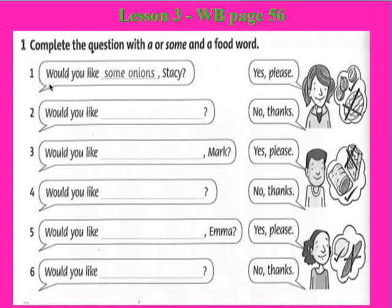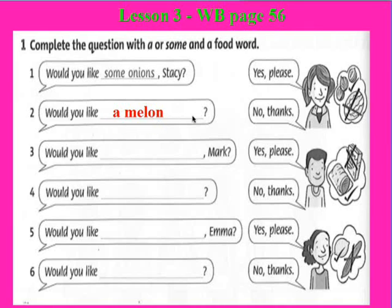Sample number one: Would you like some onions, Stasis? The student answers 'Yes, please.' So we fill in 'onions'. In the picture, Stasis also has a melon and answers 'No, thanks.' So here we fill in: Would you like a melon? No, thanks.